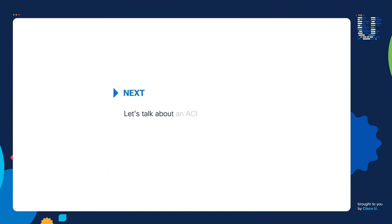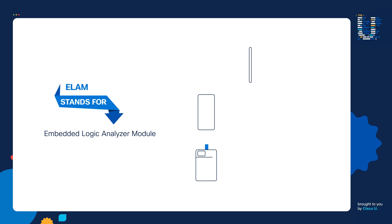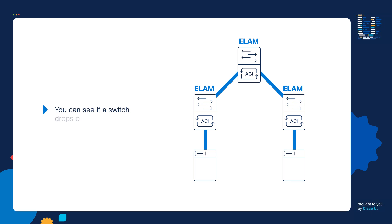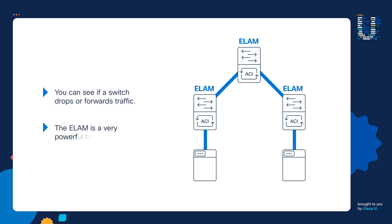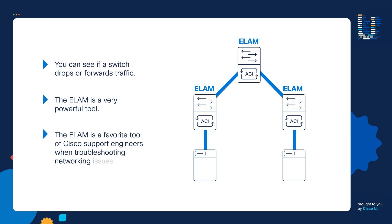Let's talk about an ACI troubleshooting tool called the ELAM, which stands for Embedded Logic Analyzer Module. Every Nexus 9000 switch comes with a packet capturing tool called the ELAM. Using the ELAM, you can see if a switch drops or forwards traffic. The ELAM is a very powerful tool and in fact it's a favorite tool of Cisco support engineers when troubleshooting networking issues.